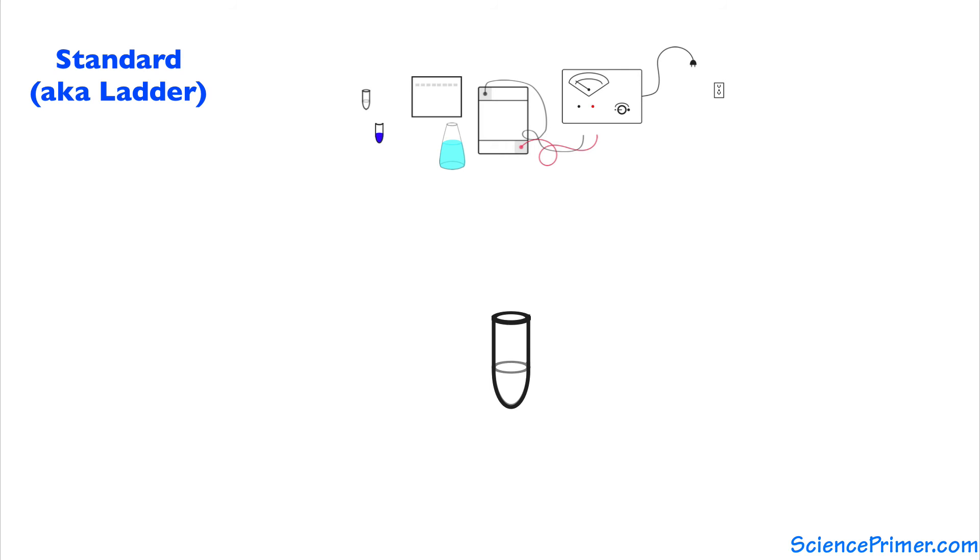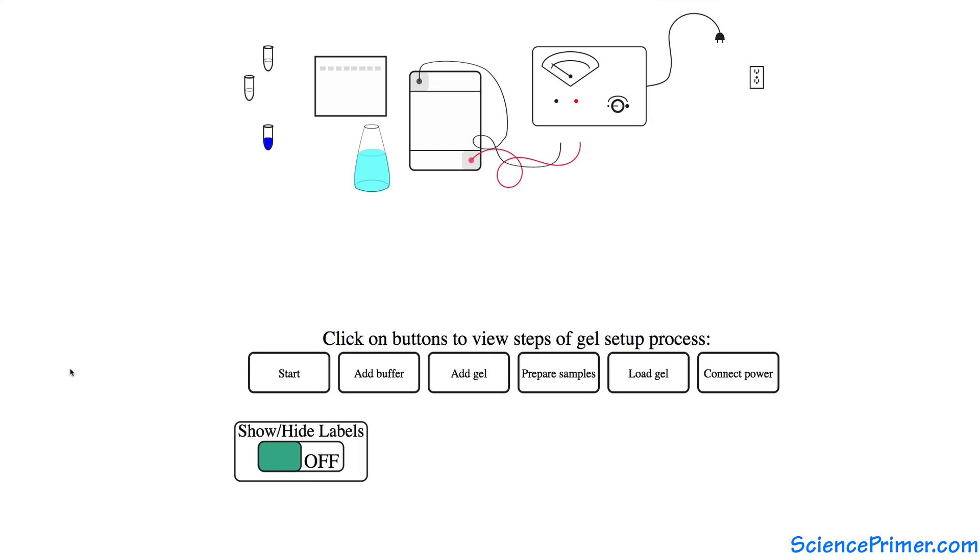By comparing the movement of the fragments of known length in the standard with the fragments in a sample, an accurate estimate of the length of DNA strands in the sample can be made. The standard is treated the same way as the samples, mixed with loading dye, and added into one of the wells.